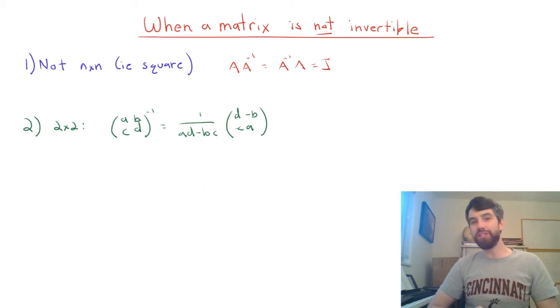Next up, in the 2×2 case we had this really nice theorem, right? It said that if you've got the 2×2, the inverse is just this. However,